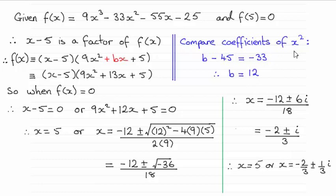You don't have to compare coefficients of x². You could compare coefficients of x - I'll leave that to you to check out, you should still arrive at b equals 12. Or alternatively, you could get that quadratic factor just by dividing this cubic expression by x minus 5.